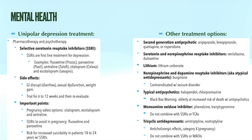The first-line treatment for unipolar major depression is psychotherapy and pharmacotherapy. Selective serotonin reuptake inhibitors, or SSRIs, are the first-line agent. Serotonin norepinephrine reuptake inhibitors, atypical antidepressants, and serotonin modulators are all reasonable alternatives, but it's common practice to start with an SSRI. Examples of SSRIs include citalopram (Celexa), sertraline (Zoloft), paroxetine (Paxil), and fluoxetine (Prozac).